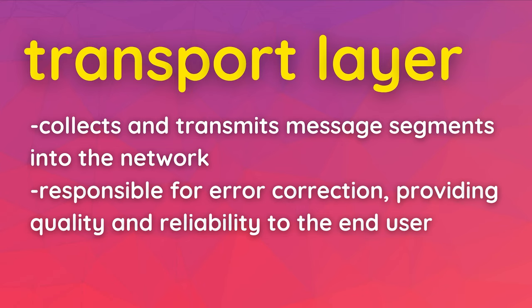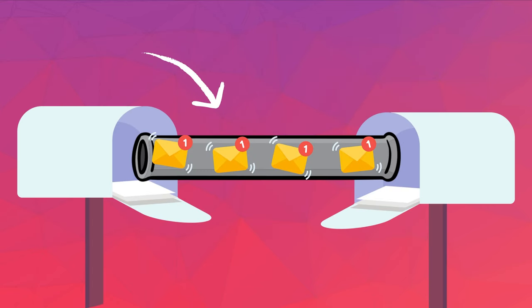How do packets actually get sent? This is called the transport layer — I like to think of it as a little tube that transports information from one location to another. The transport layer is also responsible for error correction and providing quality and reliability to the end user. Some packets may get lost in transport, and different transport protocols offer different tradeoffs — one might be more secure, another might be faster.